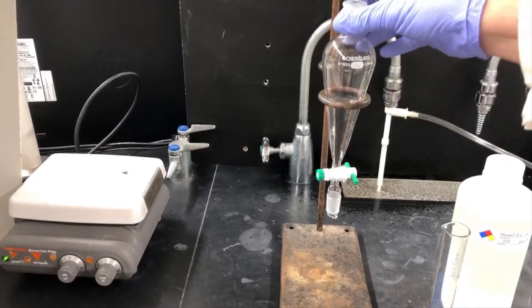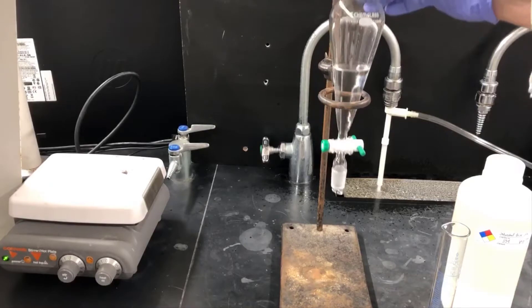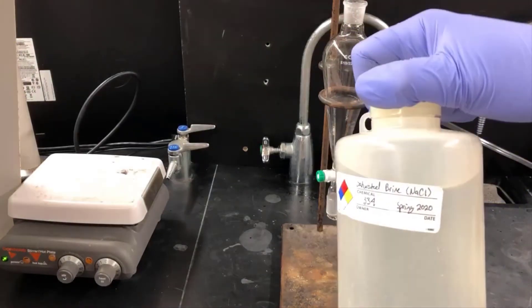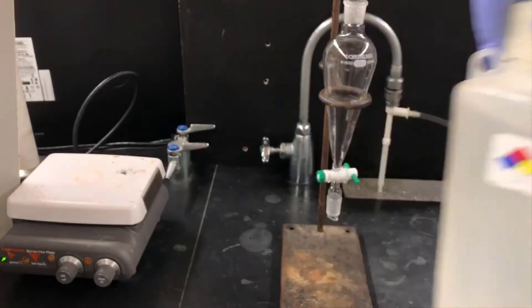The solution in this separatory funnel contains caffeine dissolved in ethyl acetate. It may also contain a little bit of water, so I'm going to wash this solution with saturated aqueous sodium chloride solution, or brine.